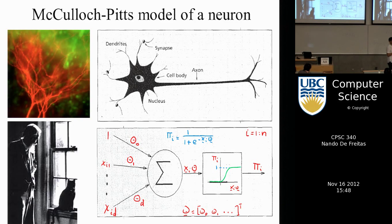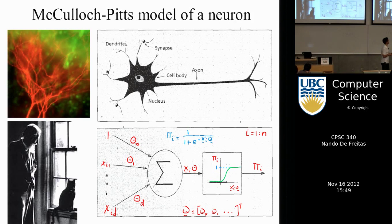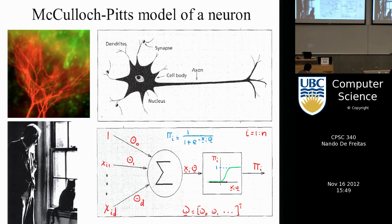The McCulloch-Pitts model: you take all inputs x_1 to x_d, set one input to 1 (for a bias term just like linear regression), take a weighted combination theta_0*1 + theta_1*x_{i1} + ... + theta_d*x_{id} — in vector notation just x_i * theta. If we were doing linear regression we'd be done, but now we pass that linear output through an activation function — the sigmoid function, which looks like an S.